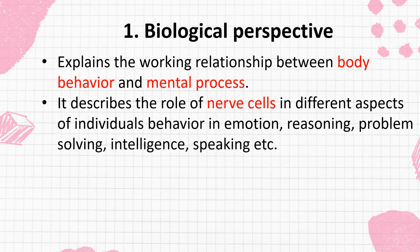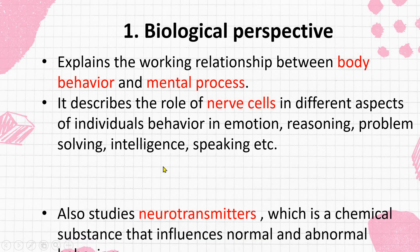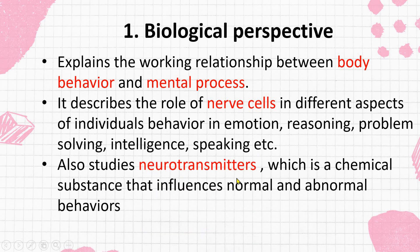So what do your nerve cells do? Different aspects of individual behaviors — emotion, reasoning, problem solving, intelligence, speaking — all these different aspects of individual behavior are studied. We are studying neurotransmitters, which are chemicals in our body, like dopamine, which influence our abnormal or normal behavior.